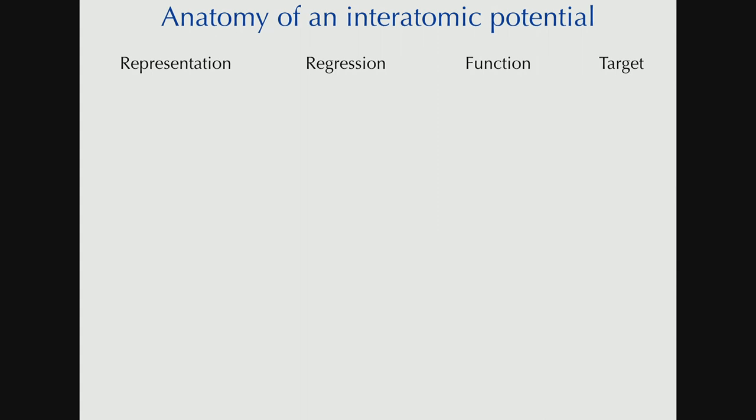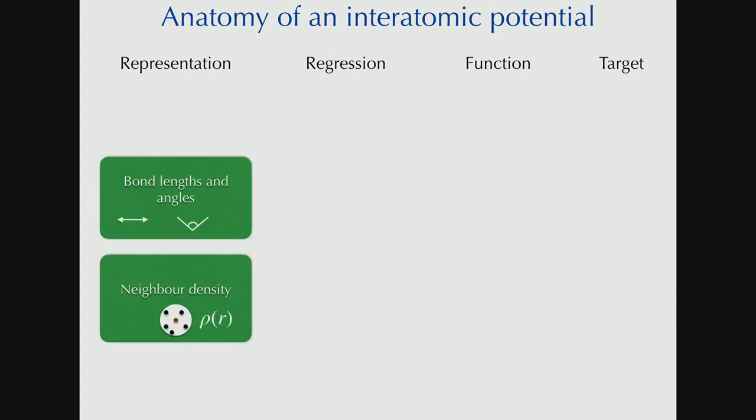So let's get back to physics. And the anatomy of an interatomic potential, these are the things that you need. So you need a representation. We need to think about how are we going to say where the atoms are. We need a regression method. We need to think about what function we're going to approximate and where we're going to get data.